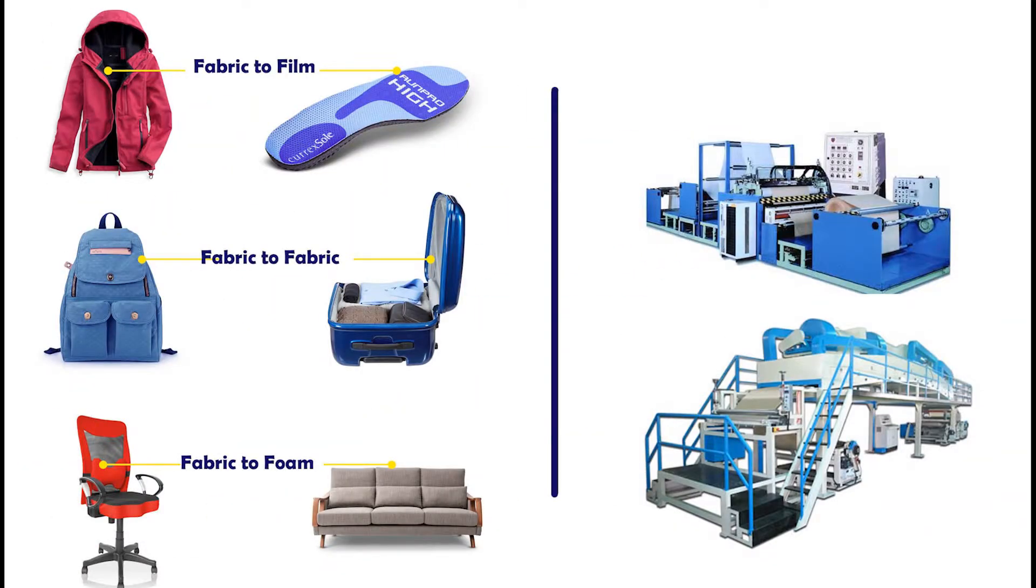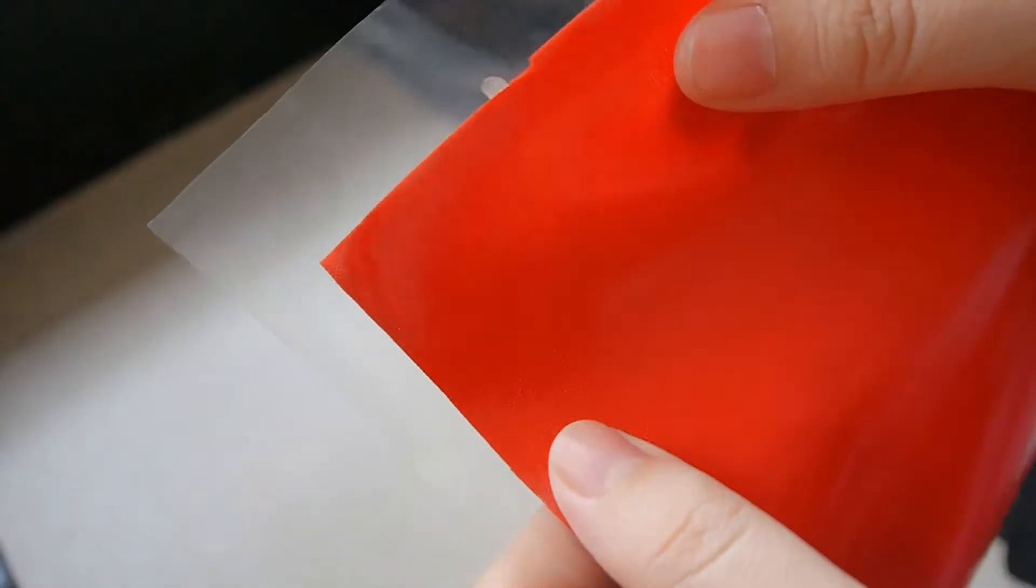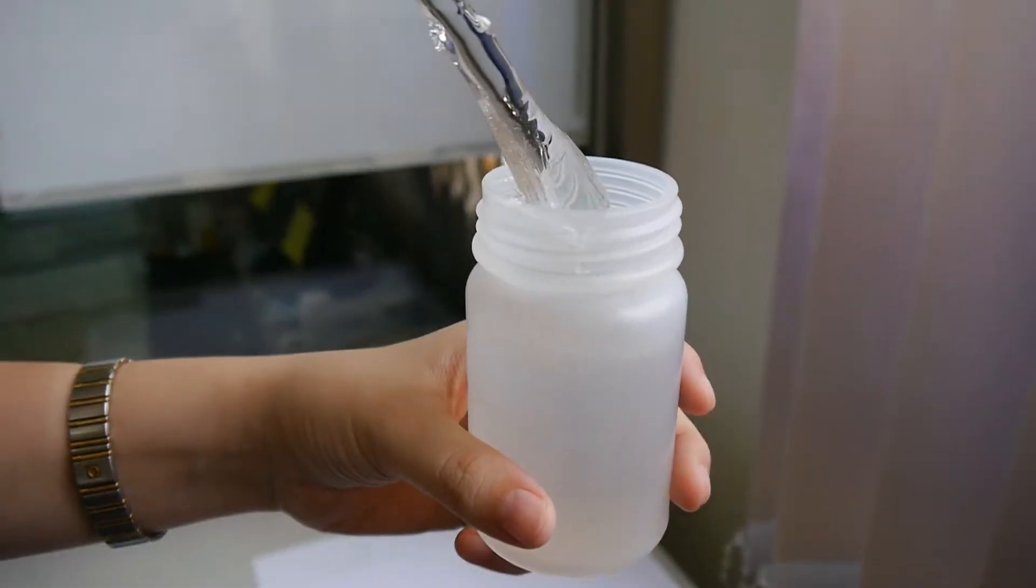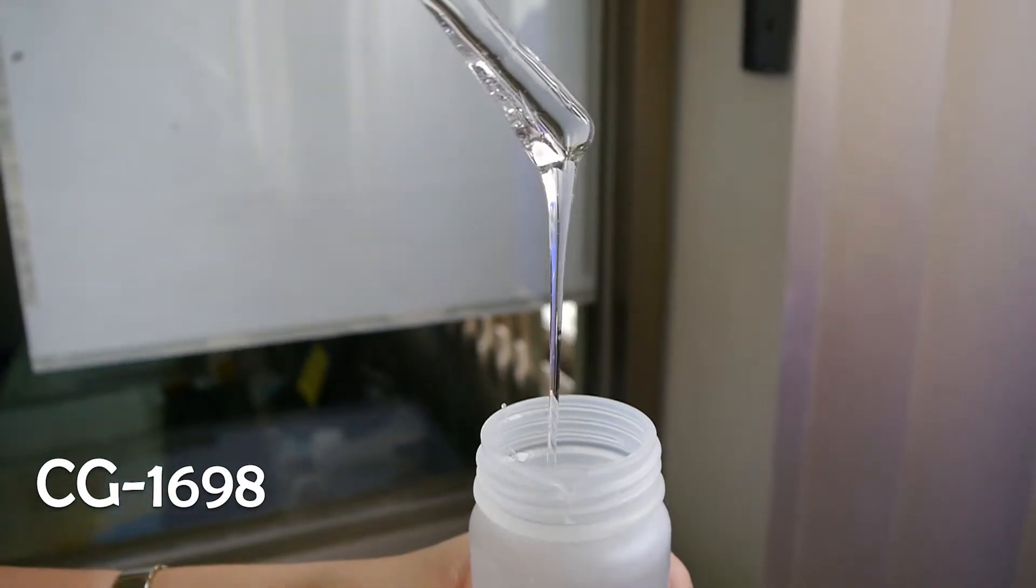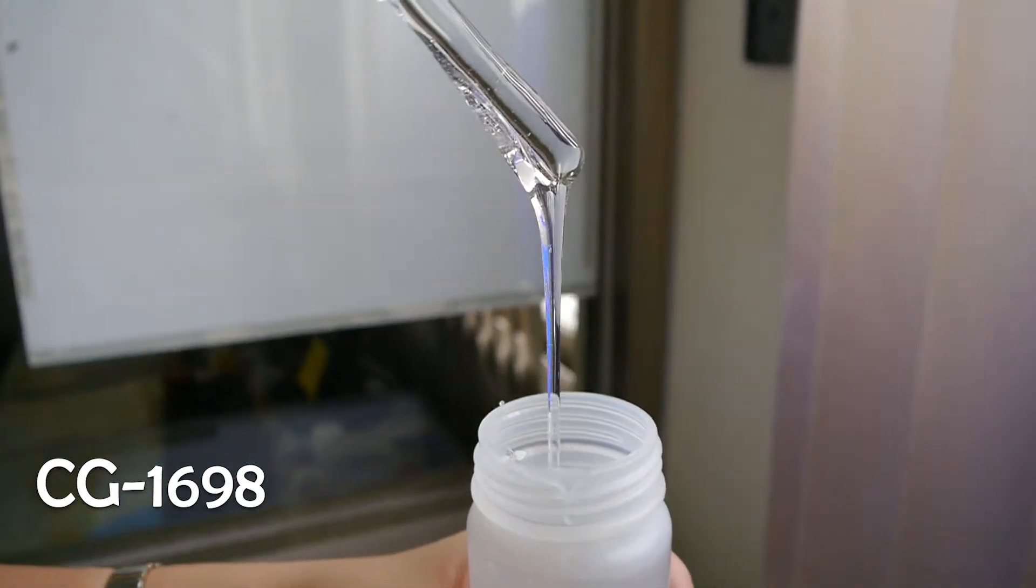Usually, our clients will use a machine to do the laminating process. In this video, we will present it in the lab. Today we will use CG1698 to laminate multi-layer fabric and breathable film.